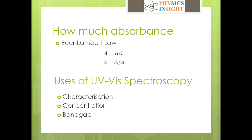We can calculate the absorption coefficient by knowing the absorbance. The absorption coefficient alpha is equal to A divided by C times L — that is, absorbance divided by concentration times path length.